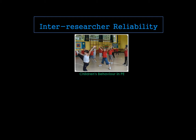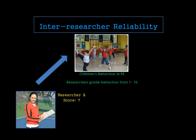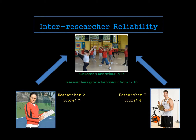Another example is observation-based research. Imagine you're watching a children's PE lesson and trying to monitor their behaviour. You've asked researchers to grade behaviour on a scale of 1 to 10. Researcher one watches the lesson and grades it at 7, but the other researcher watches the same lesson with the same children and only grades it at 4. This is a big issue — the researchers are disagreeing, and we need consistency so that results would be the same if they watched another lesson.